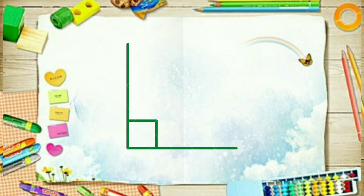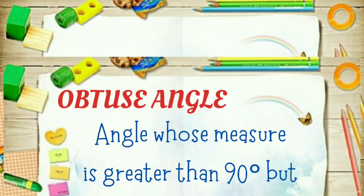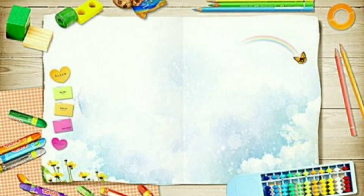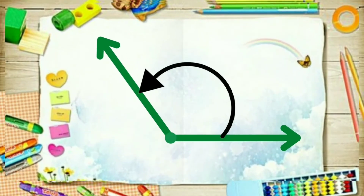Number three, we have the obtuse angle. An obtuse angle is an angle whose measure is greater than 90 degrees but less than 180 degrees. Here is its illustration.